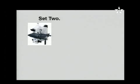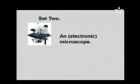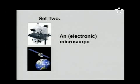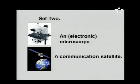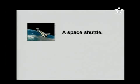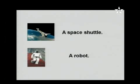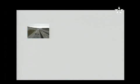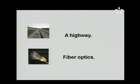Set two: this is an electronic microscope. Next one, this is a communication satellite. Next, this is a space shuttle. This is a robot. This is a highway. And next, these are fiber optics.